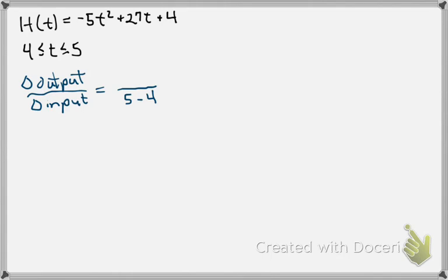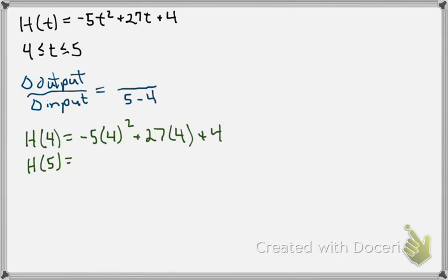We need to evaluate h of 4 and h of 5 to get our outputs that correspond with the inputs 4 and 5. So h of 4 is plugging 4 in, so negative 5 times 4 squared plus 27 times 4 plus 4 gives 32.